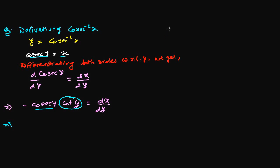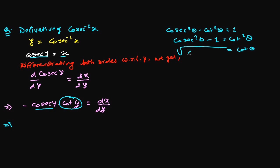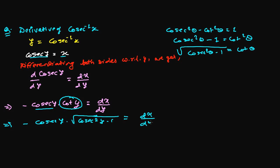We learned earlier in trigonometry that cosecant squared theta minus cot squared theta equals 1, so cosecant squared theta minus 1 equals cot squared theta. If we want to write cot theta, it will be the square root of cosecant squared theta minus 1. So here we can write minus cosecant y times the square root of cosecant squared y minus 1, and that equals dx over dy.